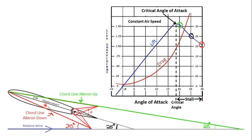The original chord line with the ailerons in their central position has an angle of 25 degrees. If you lower the aileron, it goes up to 30 degrees, and if you raise the aileron, it goes down to 20 degrees — all with the same relative wind.